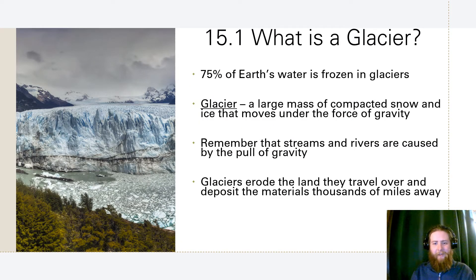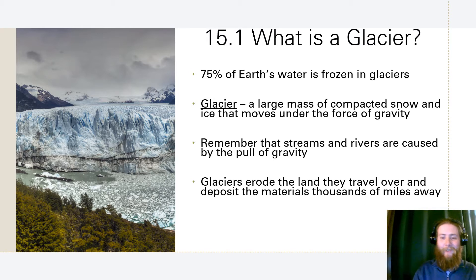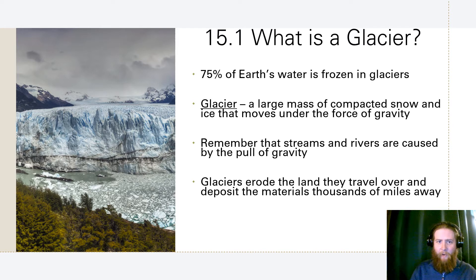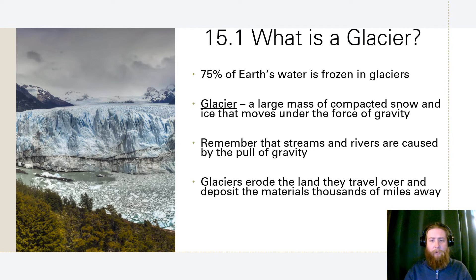The first thing we need to do is define what a glacier is — what actually constitutes the definition of a glacier. 75% of Earth's freshwater is frozen in glaciers. This is not just Earth's water; this is Earth's specifically freshwater. A glacier is a very large mass of compacted snow and ice that moves under the force of gravity.